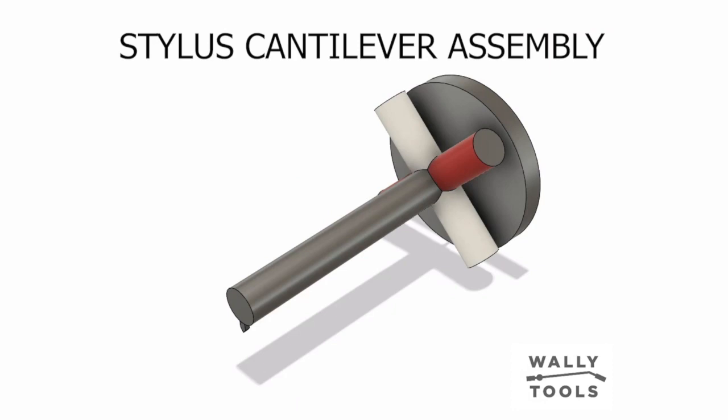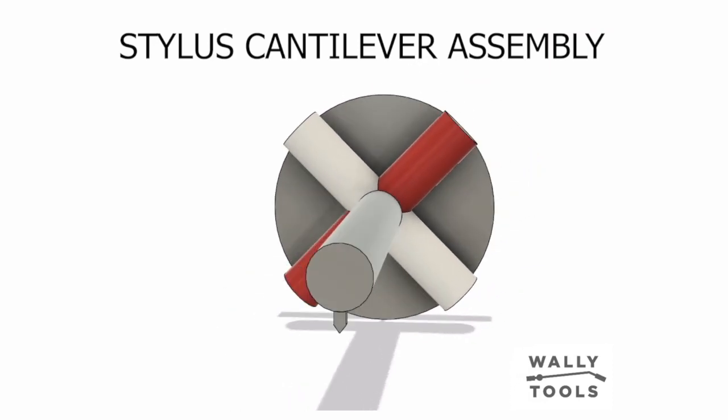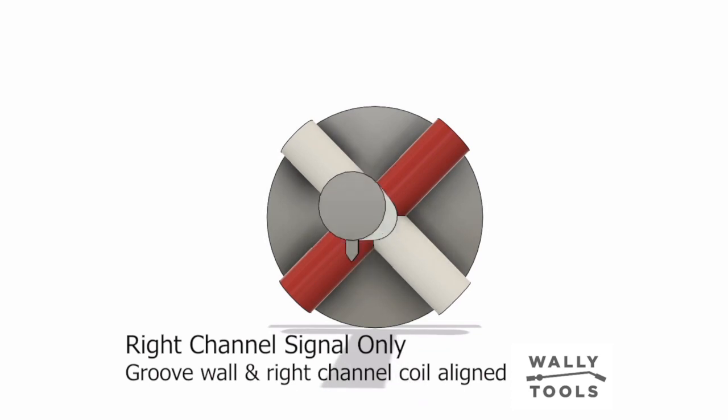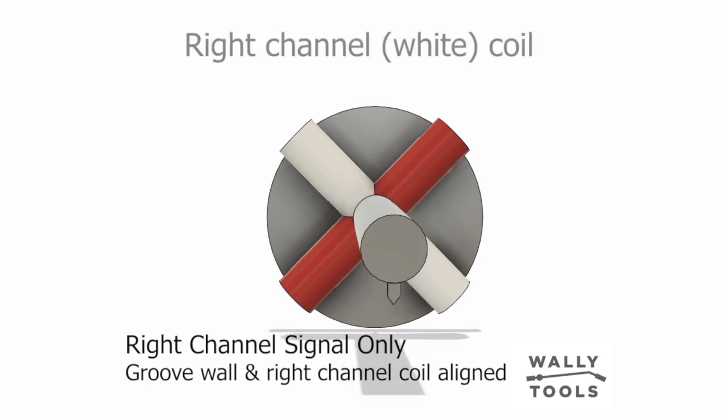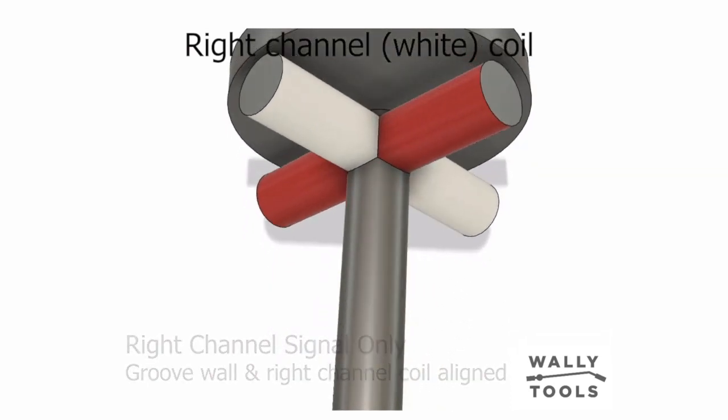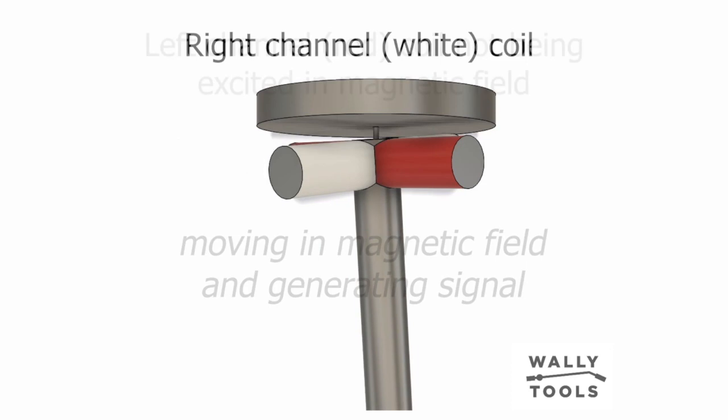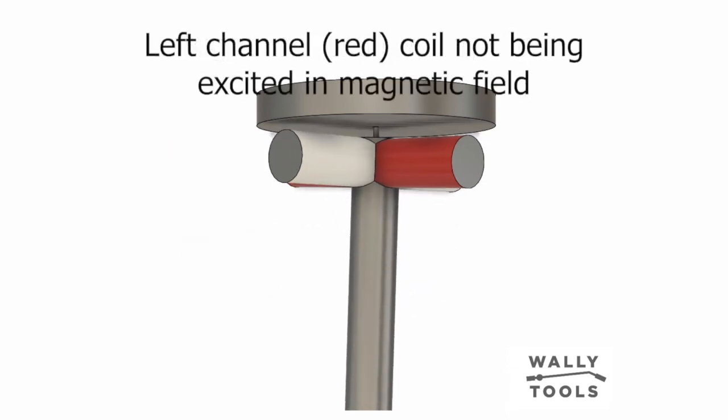You'll see this animation of a stylus cantilever assembly being modulated at a 45 degree angle by the right channel content of the groove. As the right channel is being modulated, the white coil formers are moving in the magnetic flux field and throwing off an electrical signal.